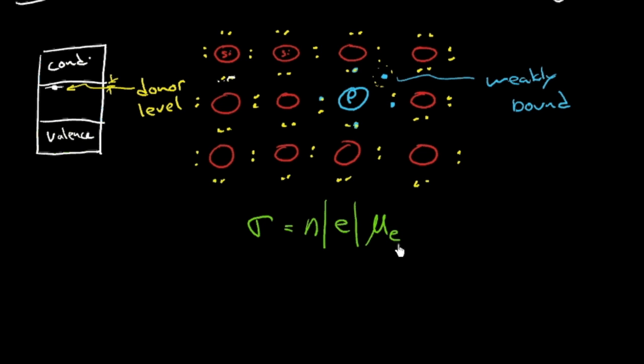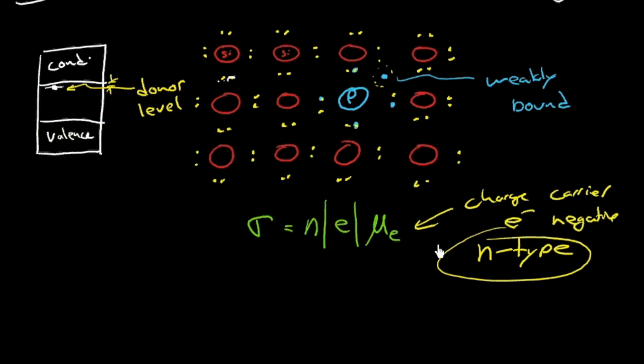And similarly, we could dope with. Oh, and so actually, so one last thing is the charge carrier is the electron. And the electron is negative. So we call this an n-type semiconductor, n-type.